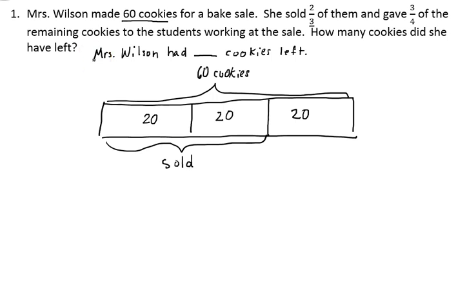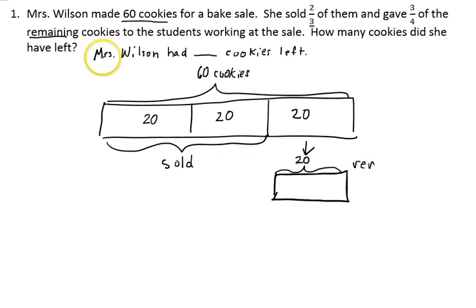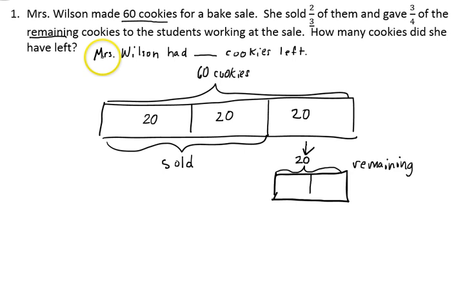The next part of the question says she gave three-fourths of the remaining cookies to the students. It's important to notice that it's of the remaining cookies. So this last piece represents the remaining cookies. I'm going to redraw that tape showing 20 cookies as the remaining cookies. We have 20 cookies remaining, and she gave three-fourths of them to the students, so I'm going to divide those 20 cookies into fourths. That means there are five cookies in each fourth.